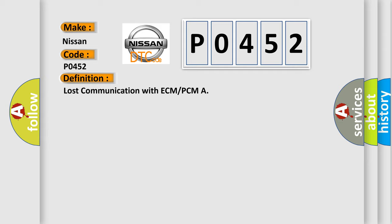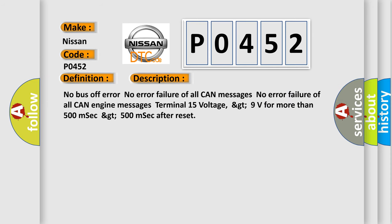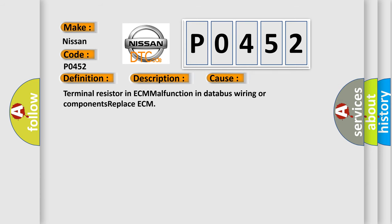And now this is a short description of this DTC code: No bus off error, no error failure of all CAN messages, no error failure of all CAN engine messages, Terminal 15 voltage greater than 9 volts for more than 500 milliseconds after reset. This diagnostic error occurs most often in these cases: terminal resistor in ECM malfunction, in database wiring or components, replace ECM.